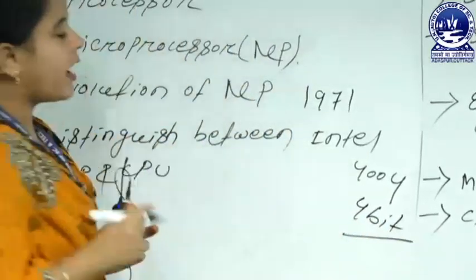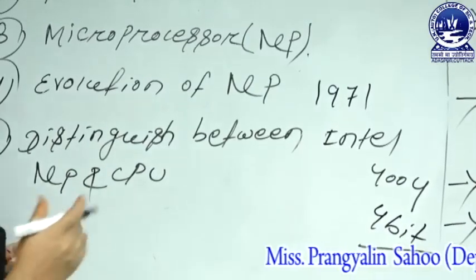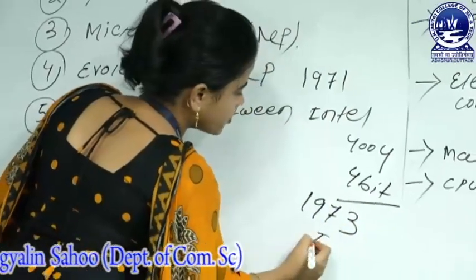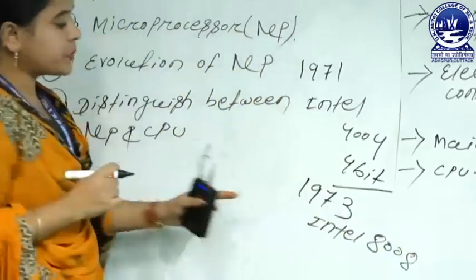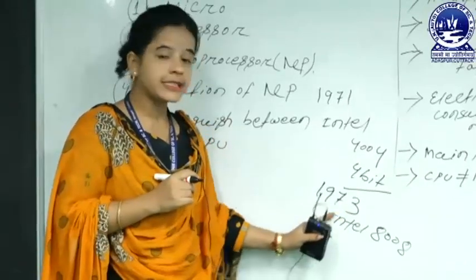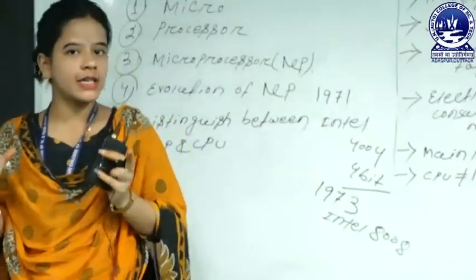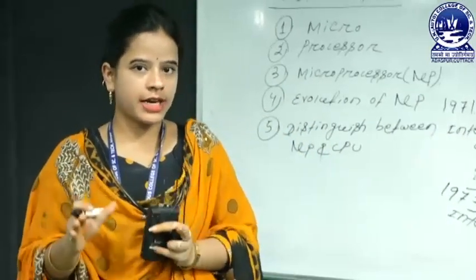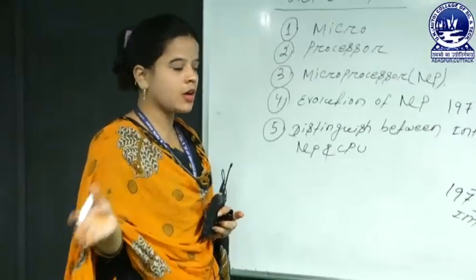After that, another new microprocessor evolved in 1973, also by Intel Corporation, called the Intel 8008. This processor is similar to Intel 4004, but whenever instructions were executed, the word size was by default 8-bit format. However, it only executed arithmetical data manipulations like addition and subtraction, and also logical AND and OR operations.